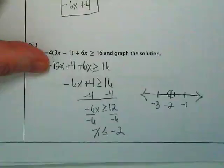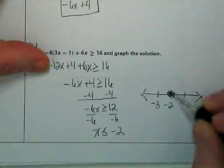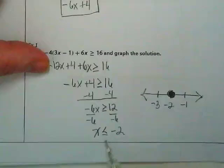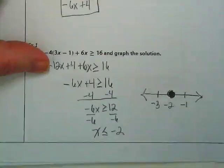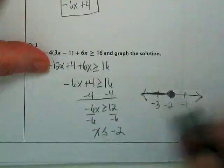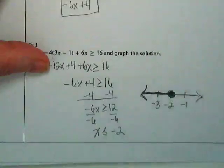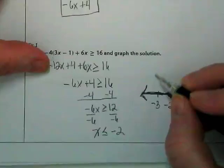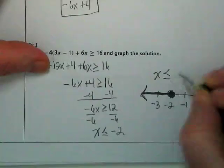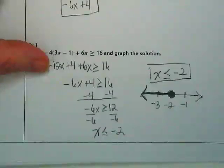We circle it and we ask ourselves what? Is it closed or open? Because it's less than or equal, in which direction do we shade the line? Who said to the right? When I have to do it off to the side like this, I like to rewrite the inequality above it because basically this is the title of that graph.